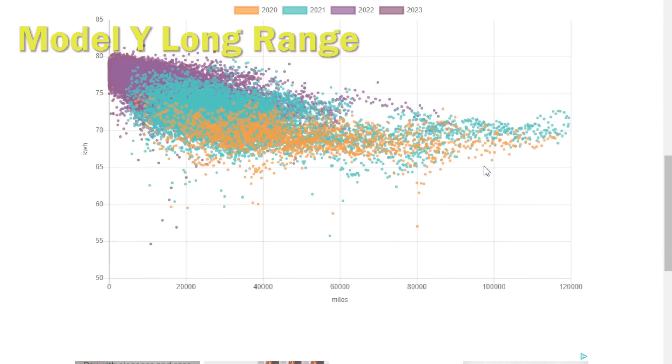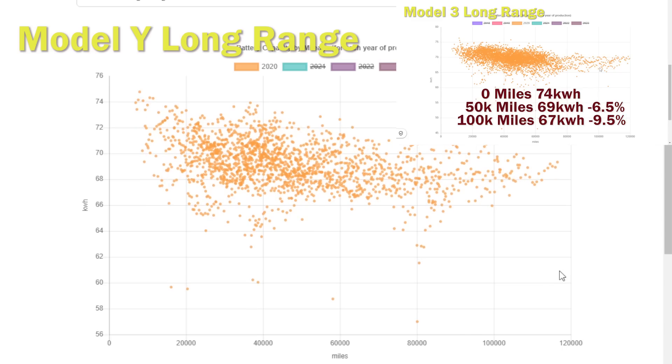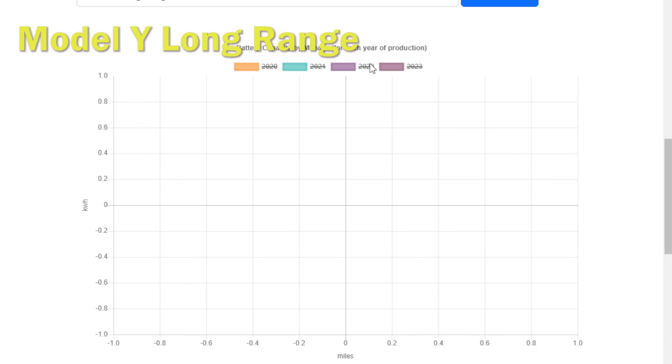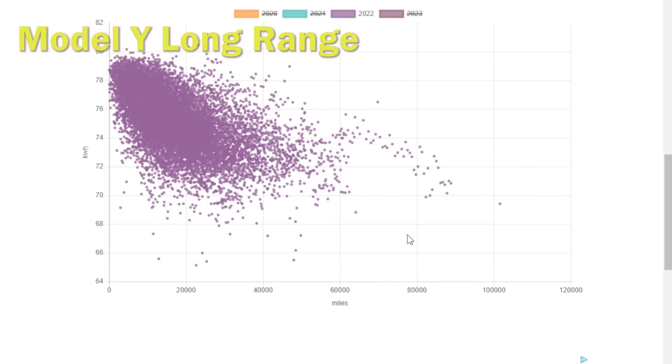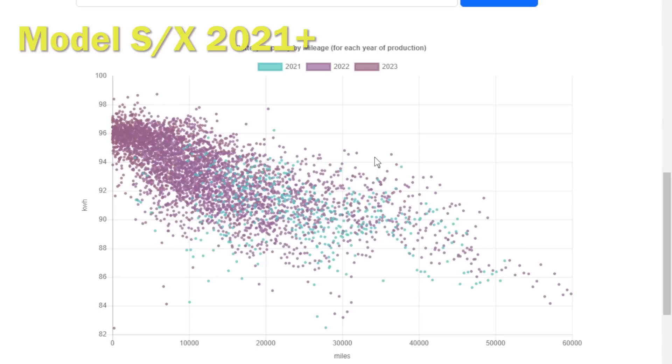We're now just going to have a quick look at the Model Y battery, the long range to start with, going back and filtering and comparing it with the Model 3 long range. In reality, we're getting very similar results as you pretty much expect. There doesn't seem to be anything about the Model Y long range which is causing it to have significantly different results to the Model 3 equivalent, which I think is probably good news. Probably the most noticeable thing we can see is the fact on things like the 2022 model, the early degradation seems to be a little steeper initially or quicker than the Model 3 equivalent, but it seems to level off at the same level.